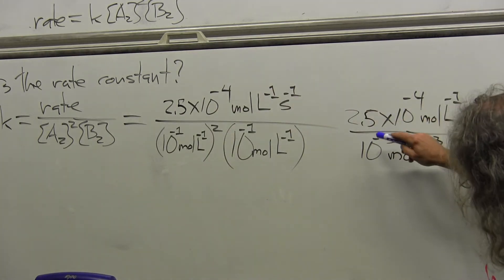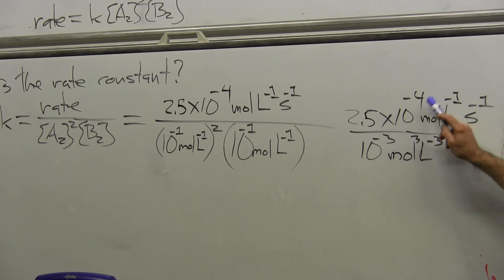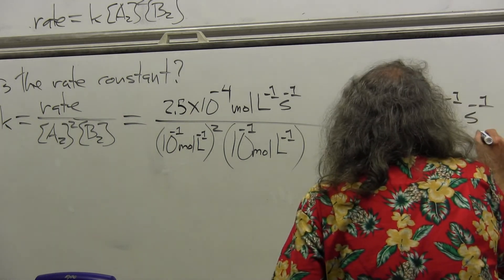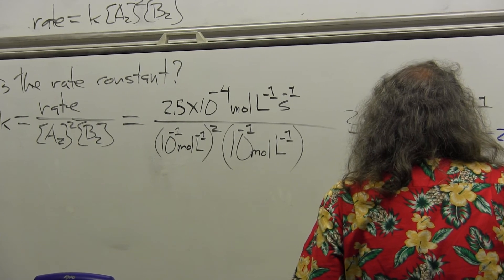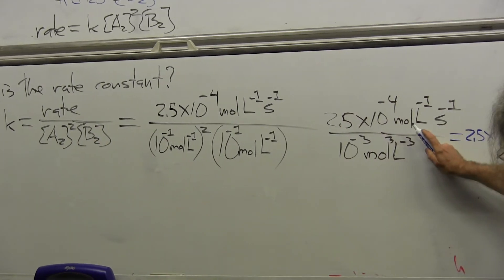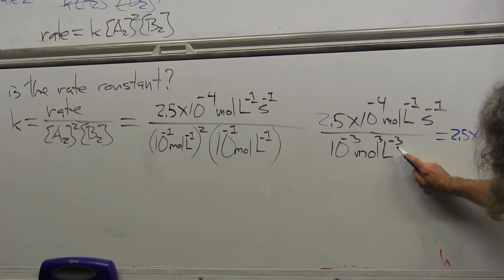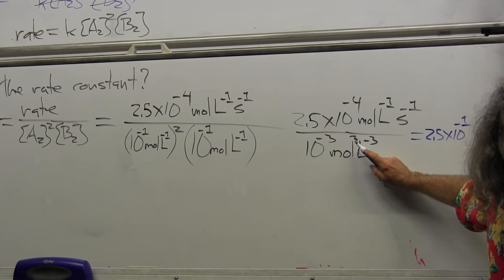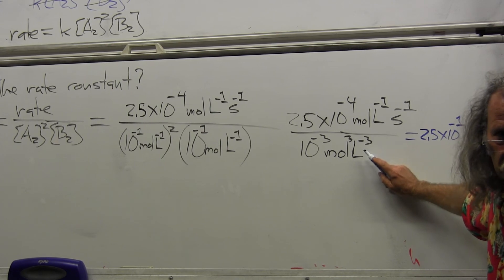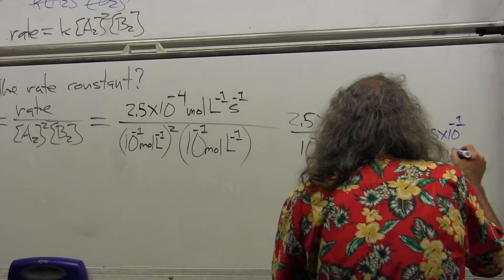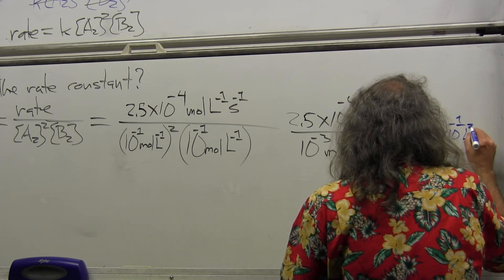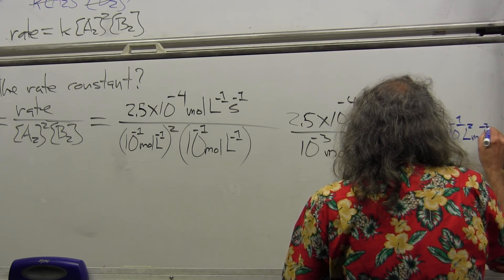Now I'm going to end up with, the only math I have to do, the 2.5 is fine, the mantissa is just the characteristic I've got to work in. 10 to the minus 4 divided by 10 to the minus 3 is 10 to the minus 1, which equals 2.5 times 10 to the minus 1. But now moles per liter divided by moles cubed per liter cubed is going to be moles to the minus 2 and liters squared. So it's going to be liters squared per mole squared per second.